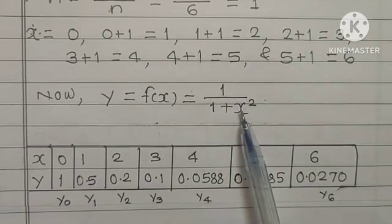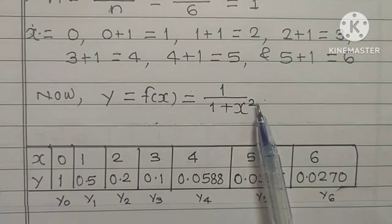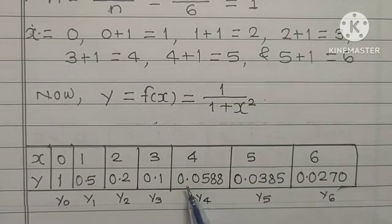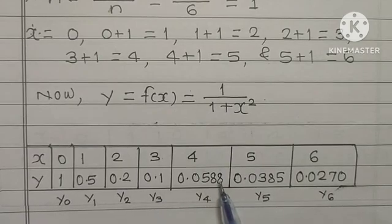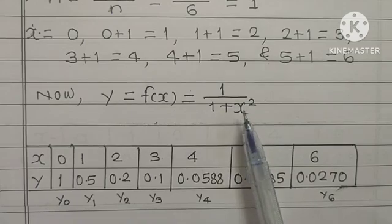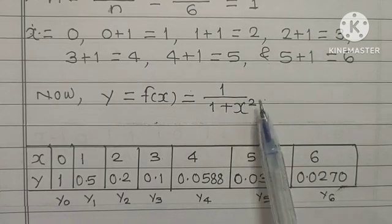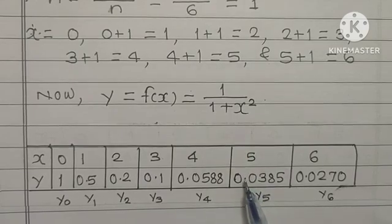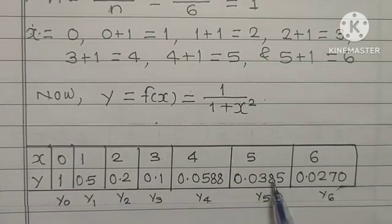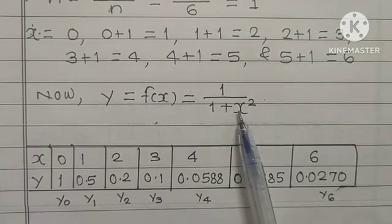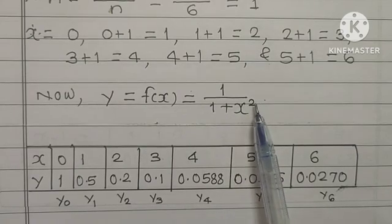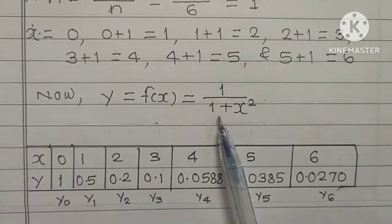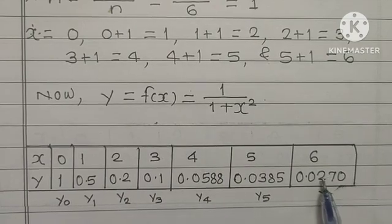Put X is equal to 4. 4 square is 16, 16 plus 1 is 17. 1 upon 17, you will get 0.0588. Put X is equal to 5. 5 square is 25, 25 plus 1, that is 26. 1 upon 26, you will get 0.0385. And finally, put X is equal to 6. 6 square is 36, 36 plus 1, that is 37. So 1 upon 37, that means 0.0270.